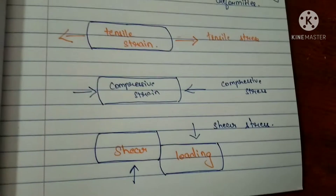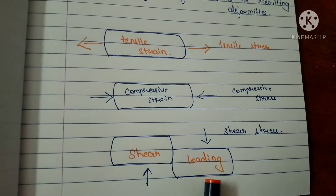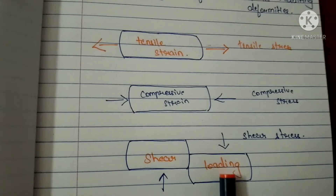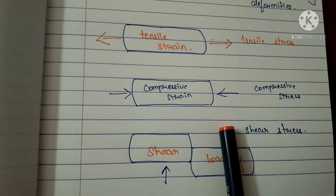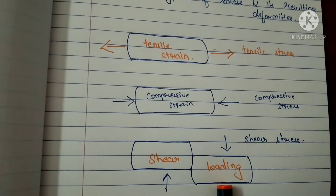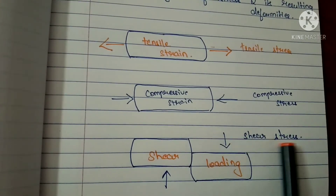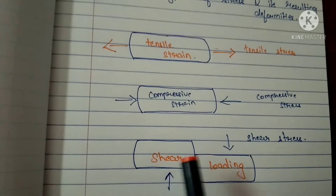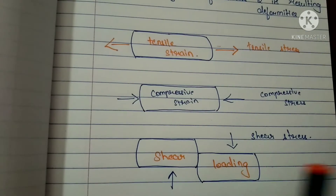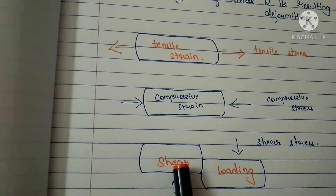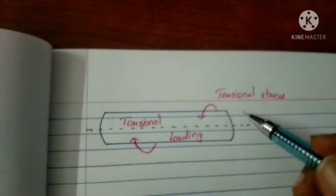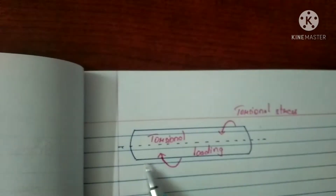The third type: if two forces are acting parallel to each other but in opposite directions, this is known as shear stress. Shear stress creates shear loading or shear strain in the object.